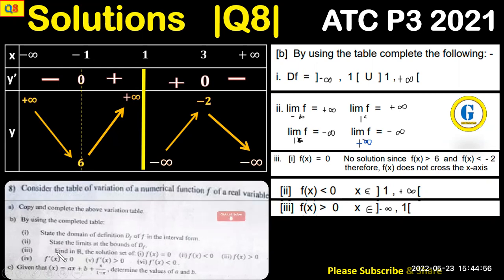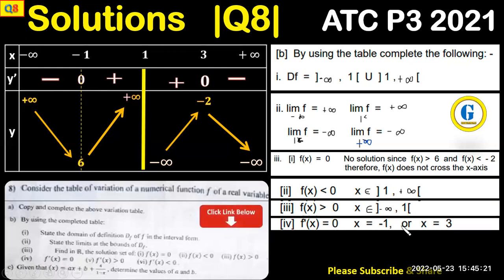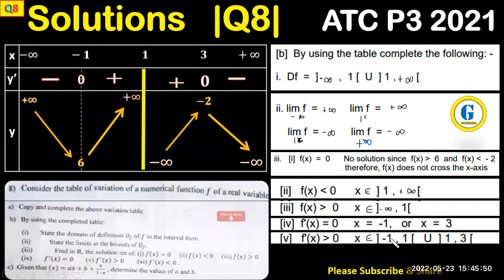For f'(x) = 0: looking at where y prime equals zero, x equals negative 1 and x equals 3 — these are the x values at the turning points. For f'(x) > 0: the gradient function is positive in two intervals — from negative 1 from above to 1 from below, and from 1 from above to 3 from below. So f prime is positive on negative 1 to 1 and from 1 to 3.